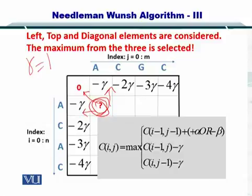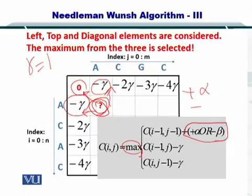How do you compute it? All you have to do is take the maximum from these three positions and incorporate plus alpha or minus beta. So if A matches with an A, then it will be 0 plus alpha.